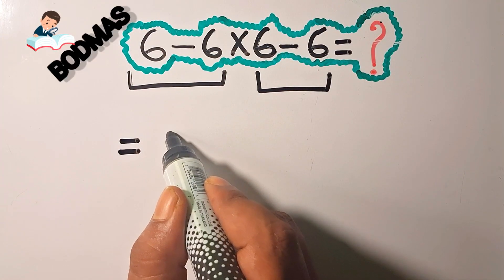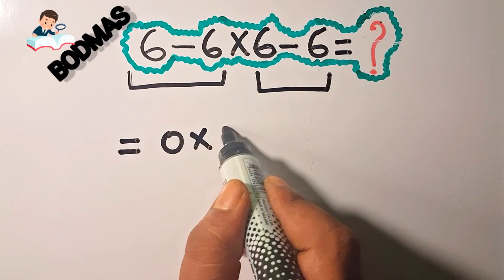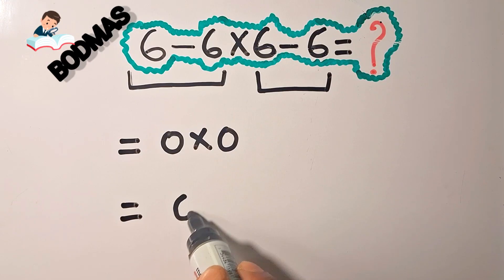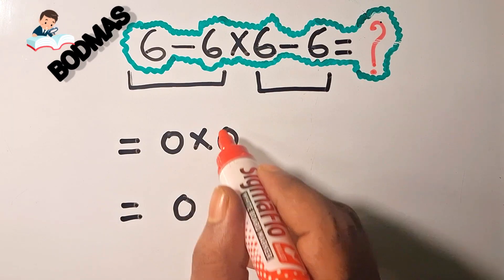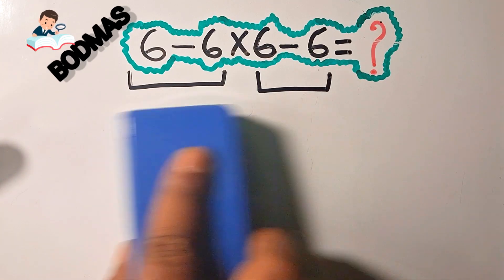6 minus 6 into 6 minus 6. 6 minus 6 is equal to 0, and 0 into 6 minus 6 is equal to 0. So the answer is 0, but this is not the right answer because we do not follow the rule.